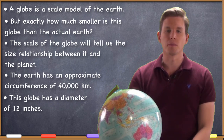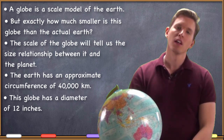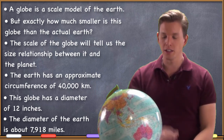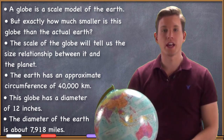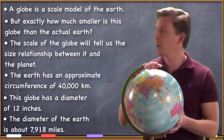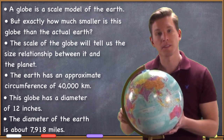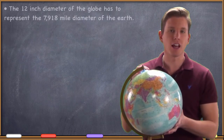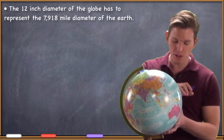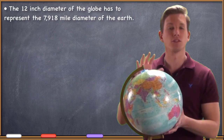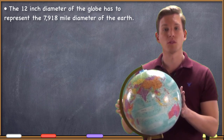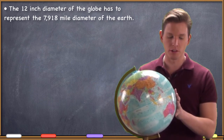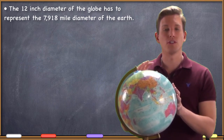The diameter of the Earth in miles is 7,918 miles — not as round a number as 40,000 kilometers. So 12 inches of diameter on this globe has to represent 7,918 miles in the real world. Now, one thing you always want to do when calculating scale is make sure both units are the same. So I want to convert 7,918 miles to inches. That way we'll have the same unit of measurement on both sides.